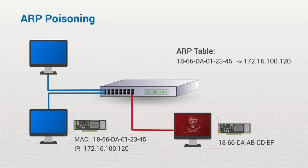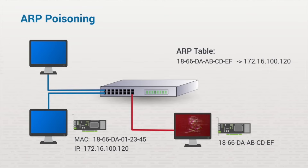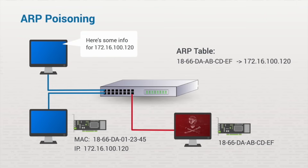Knowing this, an attacker sends commands to the switch to overwrite the contents of its ARP table by replacing a good and known MAC address in the table with the MAC address of the attacker's device. This is ARP spoofing or ARP poisoning. As a result, data that was intended for the legitimate device is now sent to the attacker's device. In many cases, the attacker captures the data and sends it on to its rightful owner. This is known as an on-path attack.